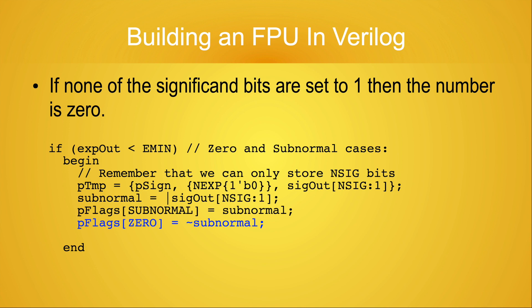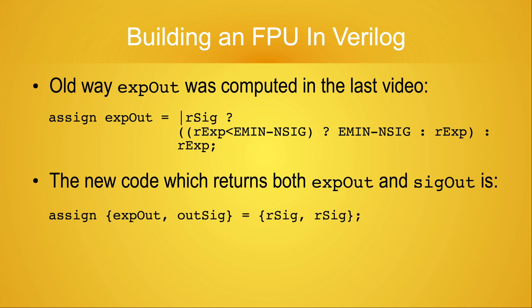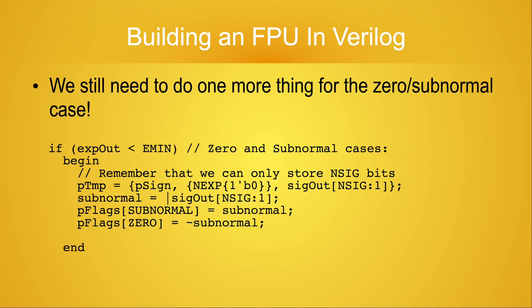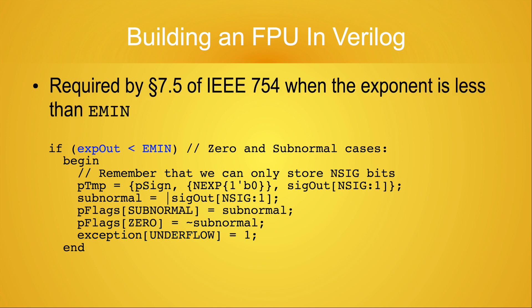That's the good news. The bad news is I didn't realize that this optimization was possible until after I published my last video. The next piece of bad news is that because I changed the rounding module after publishing the previous video, the computation of EXPOUT in the old video is now incorrect. This is the code which was presented in the previous video, and this is how the new version of the rounding module returns both the EXPOUT and SIGOUT values. We still need to do one more thing for this case: we need to signal that an underflow exception has occurred. This is required when the exponent is less than E-min.